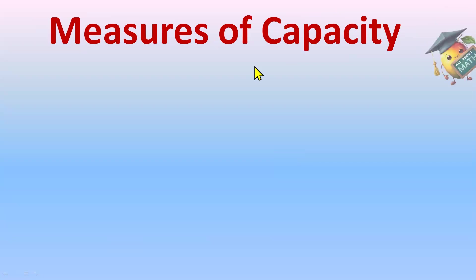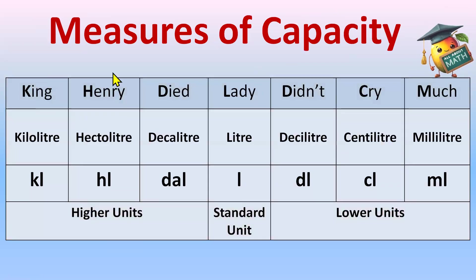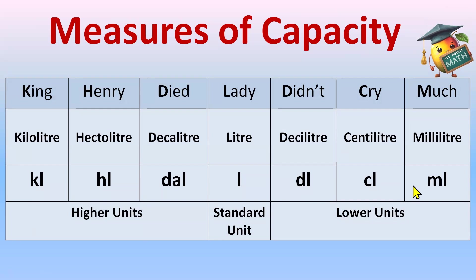For measures of capacity, remember: 'King Henry Died Lady Didn't Cry Much.' Here we use 'lady' for liter. The units are kiloliter, hectoliter, decaliter, liter, deciliter, centiliter, and milliliter, with abbreviations kl, hl, dal, l, dl, cl, and ml. Across all three — length, mass, and capacity — the line is exactly the same: 'King Henry Died... Didn't Cry Much,' with only the middle word changed: Mother, Girl, or Lady.